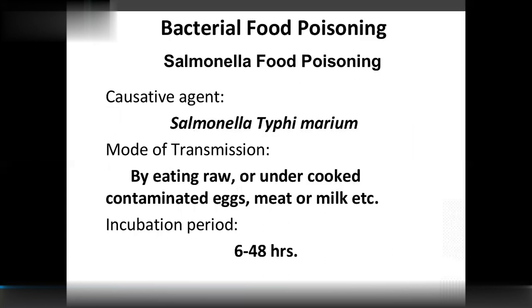Salmonella food poisoning: causative organism is Salmonella typhimurium. Mode of transmission is by eating raw and undercooked contaminated eggs, meat, or milk. If food is boiled and cooked properly, the risk is reduced. Incubation period is 6 to 48 hours.